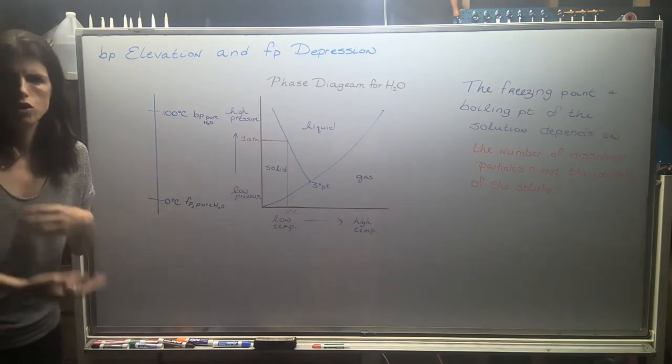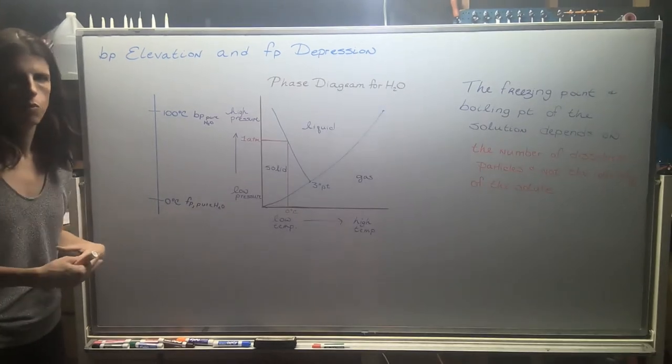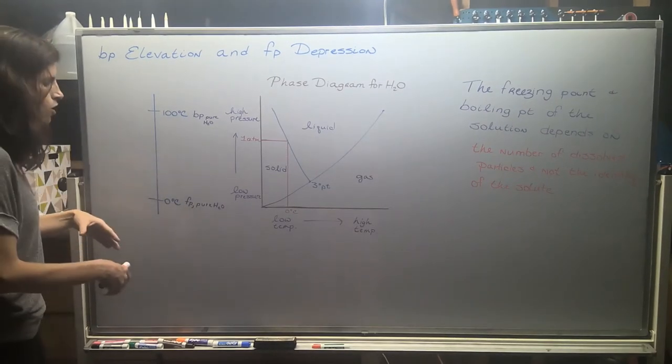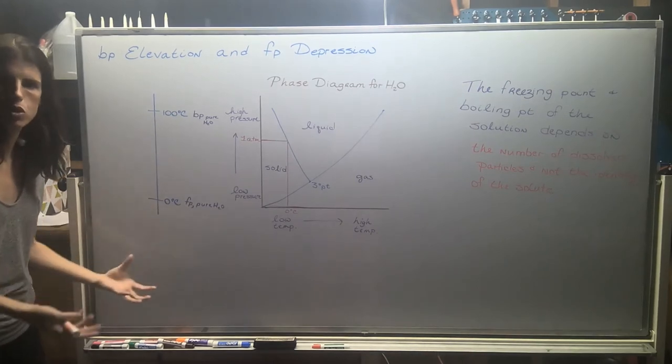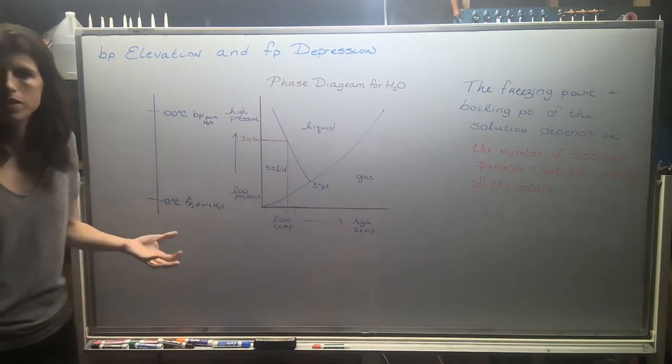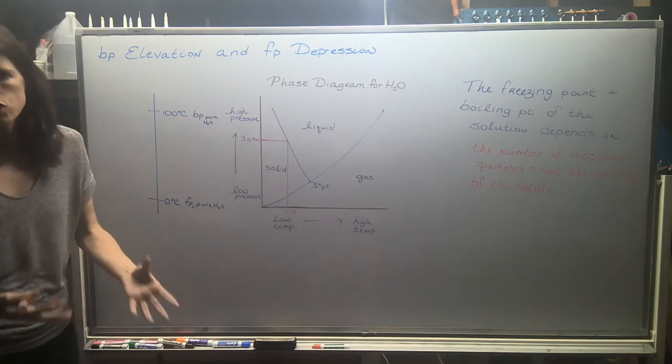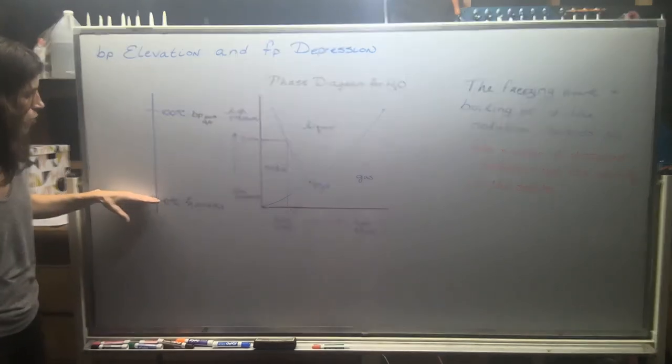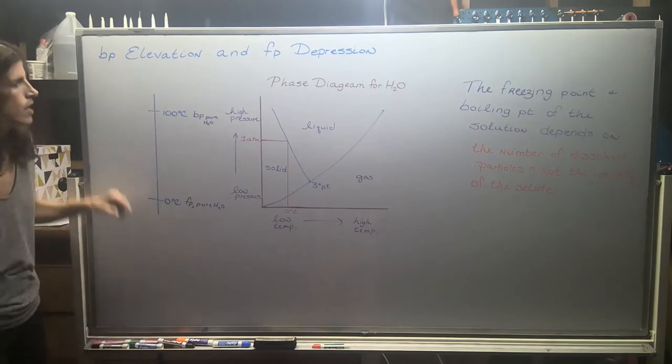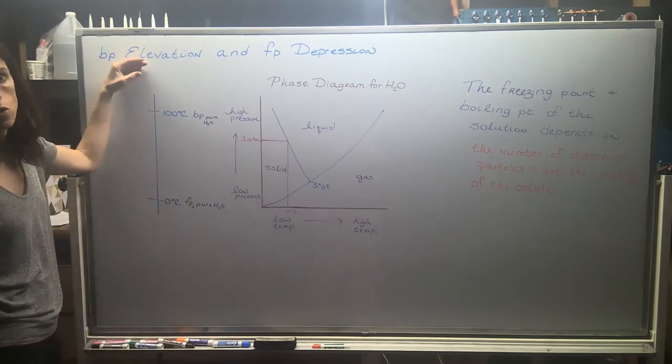But once you start dissolving something else into that water or mixing it with something else, maybe you put some sodium chloride, some table salt into the water, maybe you mixed it with ethanol or rubbing alcohol. Once you dissolve something else into that water, the freezing point drops and the boiling point goes up.